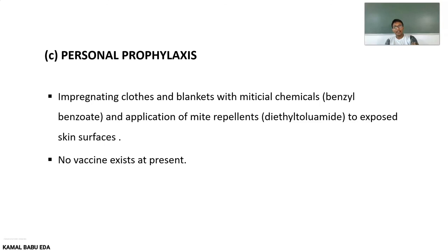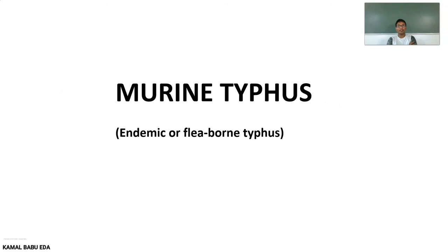For personal prophylaxis, impregnate clothes and blankets with miticide chemicals such as benzyl benzoate, and apply mite repellents such as diethyltoluamide (DEET) to exposed skin. No vaccine currently exists for Scrub Typhus.